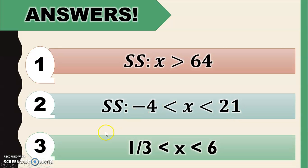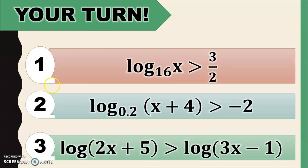And for number 3 class, 1 third less than x less than 6. The values of x are between 1 third and 6. So these are the answers for the previous logarithmic inequalities.